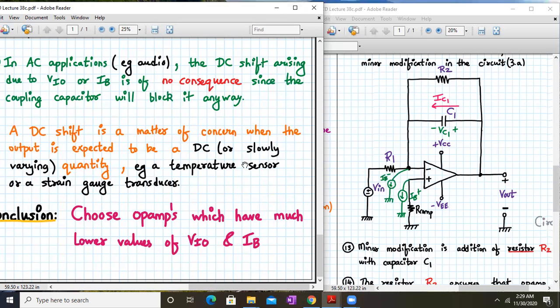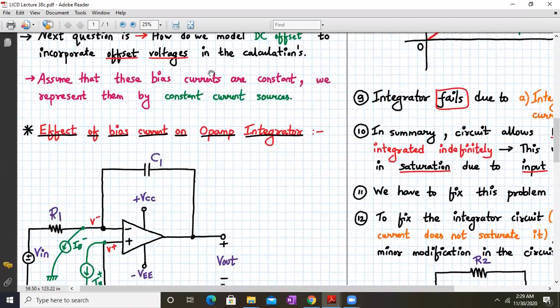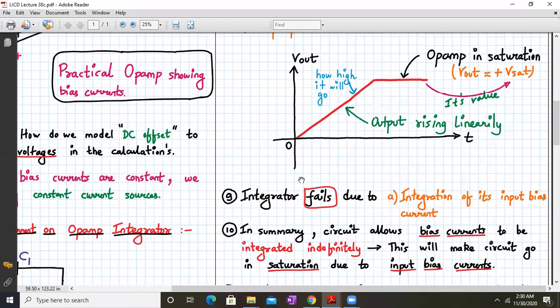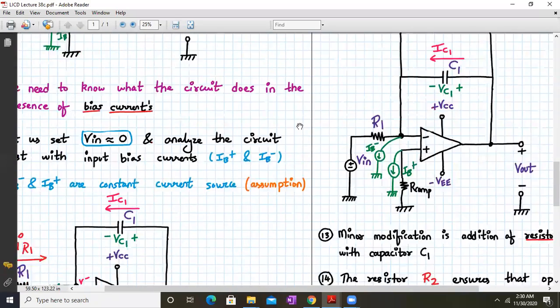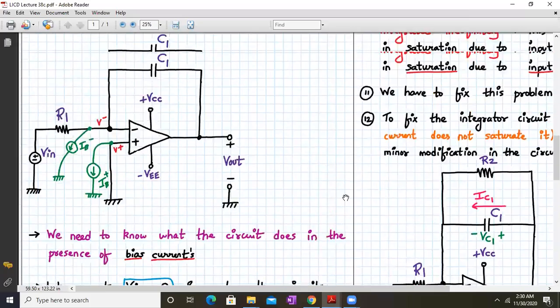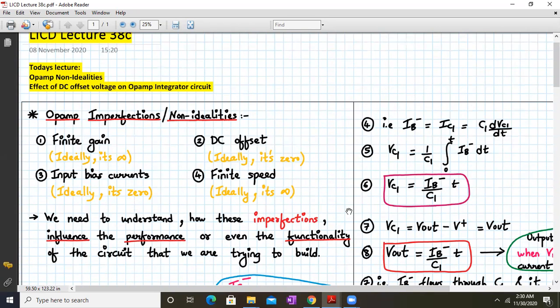That's the recommendation: choose the op-amp which has much lower value of vio and ib. In this lecture we have started with the input bias current modeling, then we have seen the effect of bias current on the op-amp integrator with all the steps and the output. Integrator fails due to integration of its input bias current. In summary, the circuit allows the bias current to be integrated indefinitely. This will make the op-amp go into saturation due to input bias current. We fix this problem by adding a resistor r2, and we have analyzed that if we add a resistor r2, it will avoid the op-amp going into saturation. We will continue on this in the next class. Until then, have a good day and thank you.